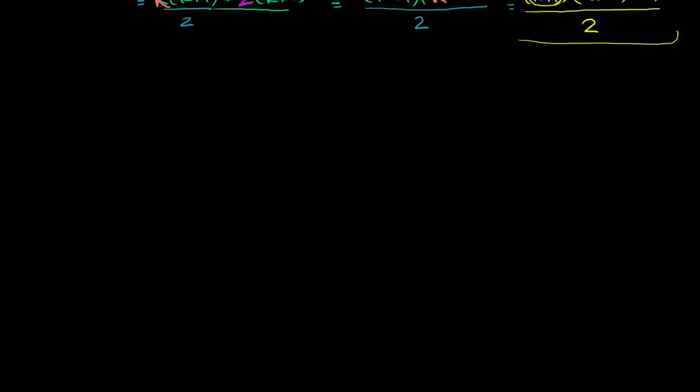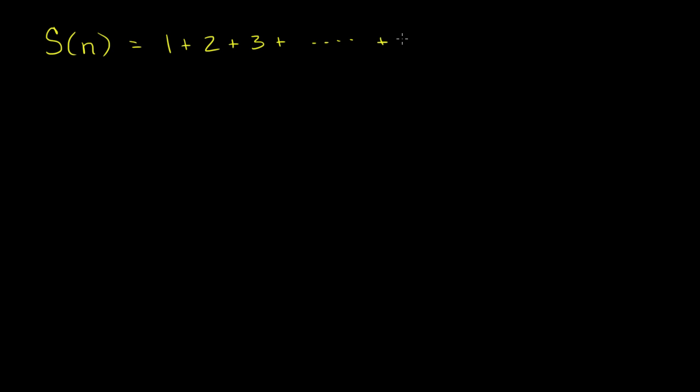So we're defining that function, S(n), as the sum of all of the positive integers up to and including n. So this is equal to, by definition, 1 plus 2 plus 3 plus all the way to plus n minus 1 plus n. So it's the sum of all of the integers up to and including n. This is how we're defining it.